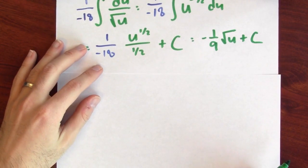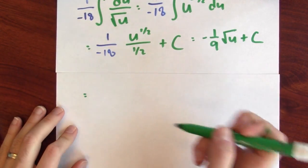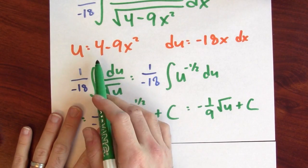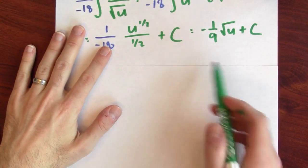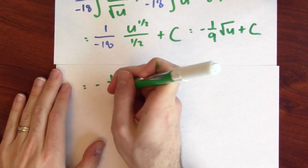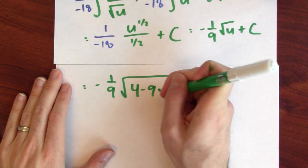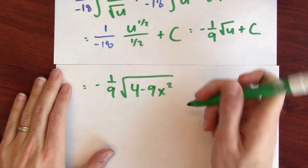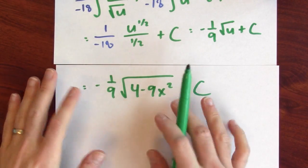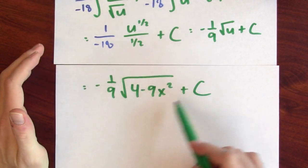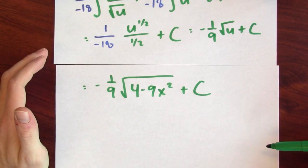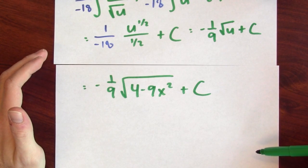Now I'll rewrite that in terms of x. So in terms of x, this is, well, remember, u is 4 minus 9x squared. So this is negative 1 ninth the square root of 4 minus 9x squared. That's what u is, plus c. So I found an anti-derivative of x over the square root of 4 minus 9x squared.